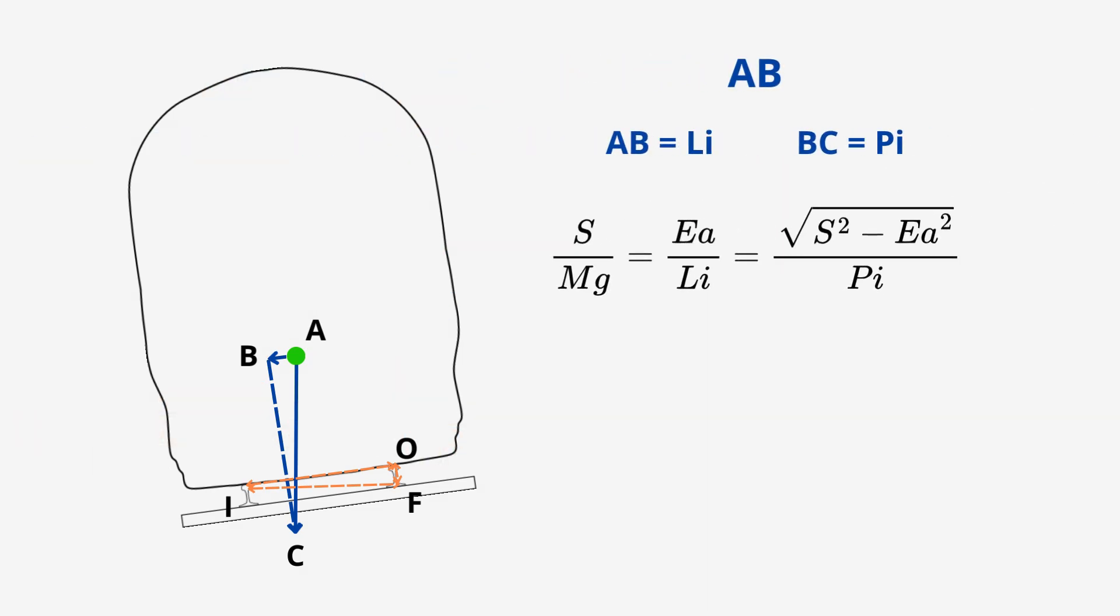Let's put that into our similar triangles relationship. Now, remember we wanted to find AB, or LI as we have renamed it. We want this to be in terms we know. So, let's take S over MG equals EA over LI and rearrange to make LI the subject. We now know the force acting inwardly.